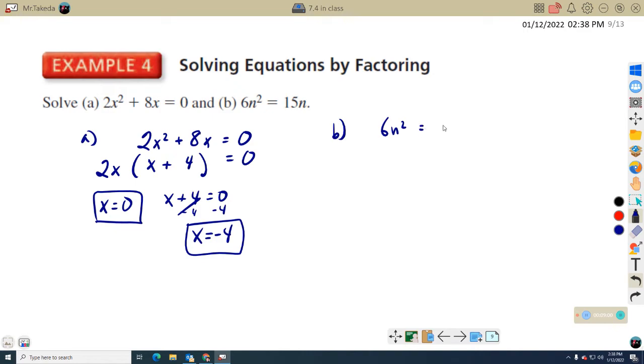6N squared equals 15N. Well, in order to use the zero products property, I have to set one side equal to zero. So I'm going to subtract 15N from both sides. 6N squared minus 15N equals zero. I subtracted 15N from both sides. So I have zero now on the right.